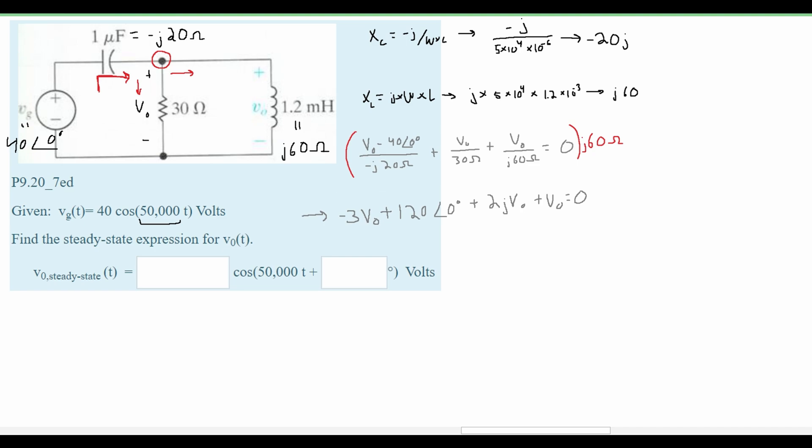From here we are going to add our V₀s together. We can only add these two because the other V₀ which is this one has a j in it. And then we are going to move our 120 with our 0 degrees angle to the right side. And from that we are going to get this equation right here.